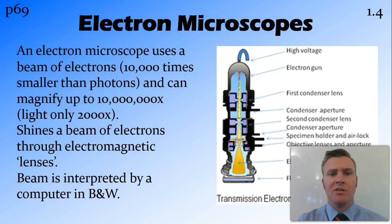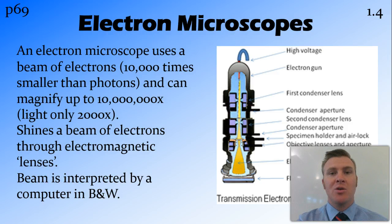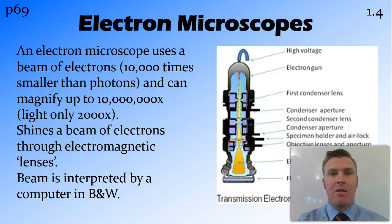Because electrons are about 10,000 times smaller than the photons of light — the particles that form light — we can get the resolution of these microscopes, or the magnification, up to about 10 million times magnification. Whereas with light microscopes, even the very good ones, we can generally only get about 2,000 times magnification.